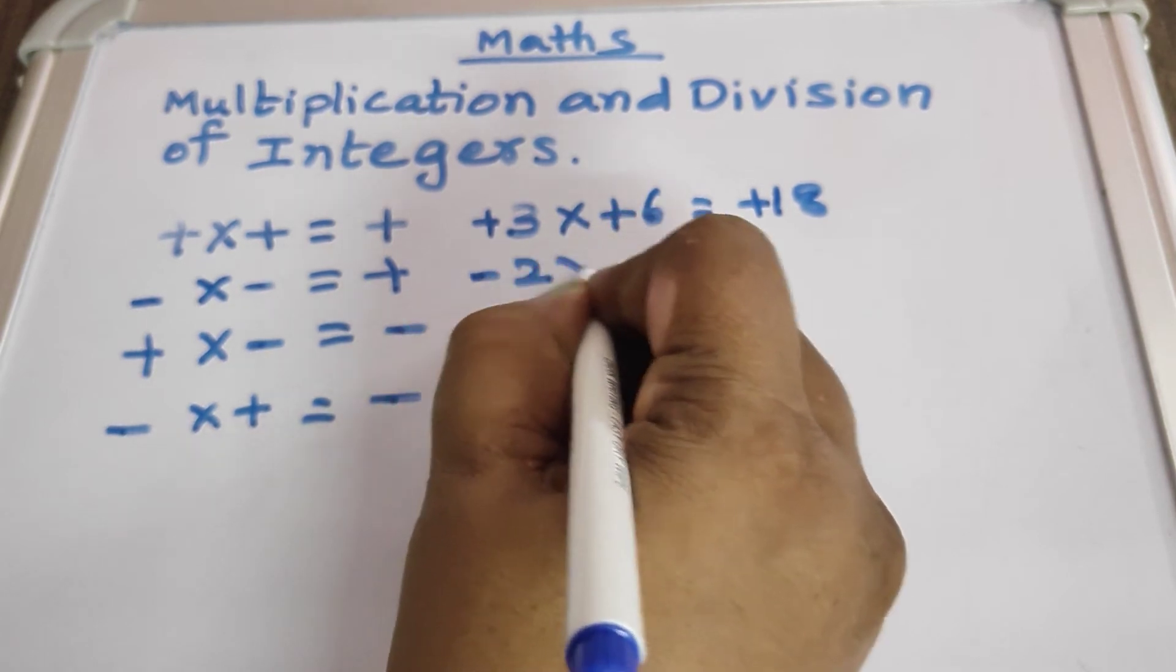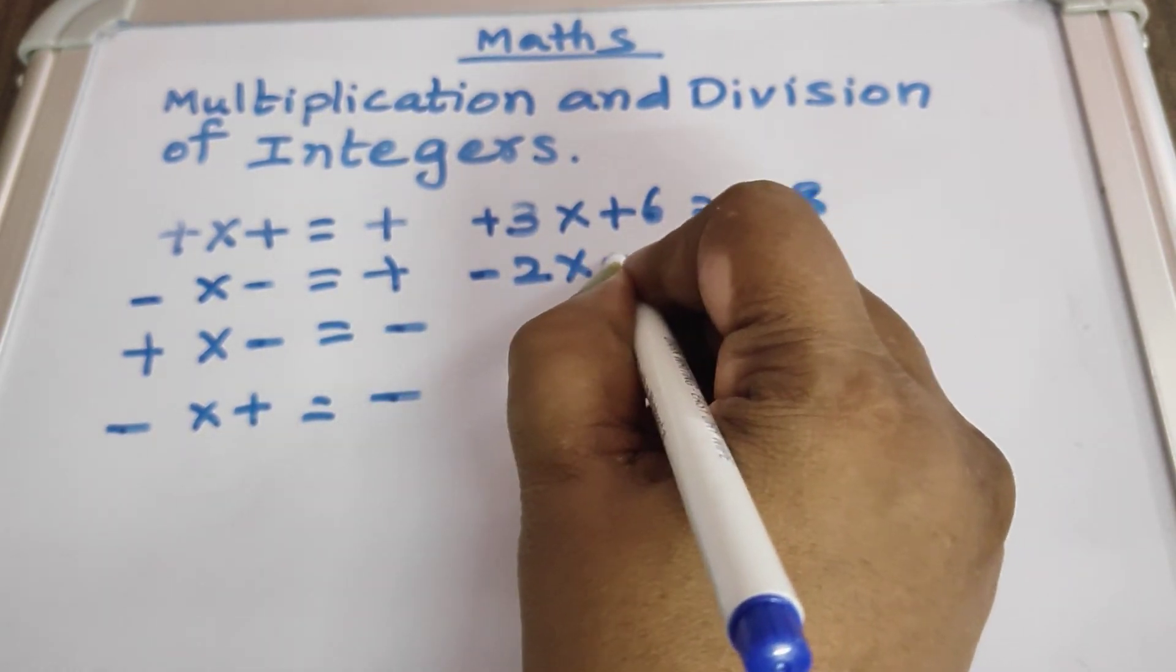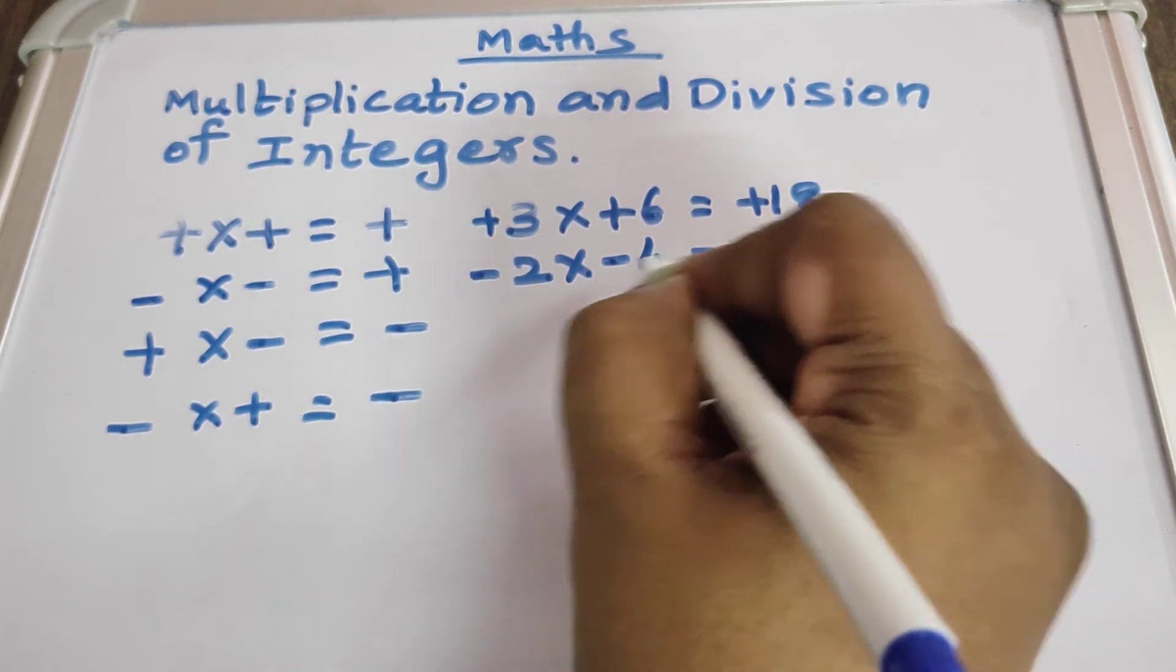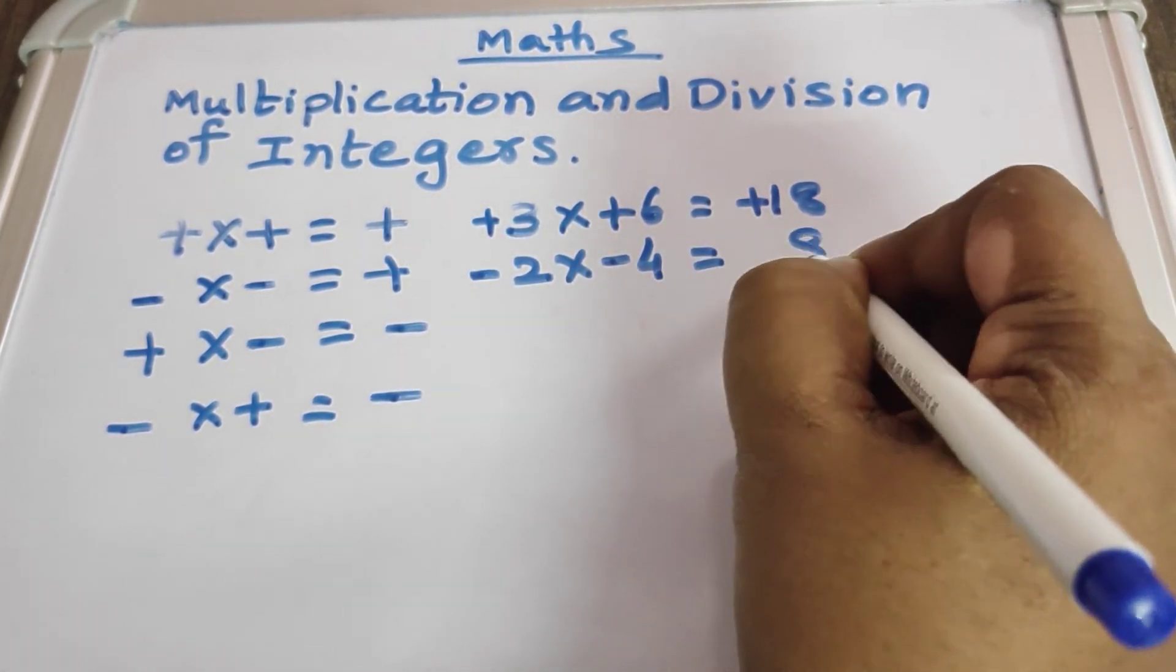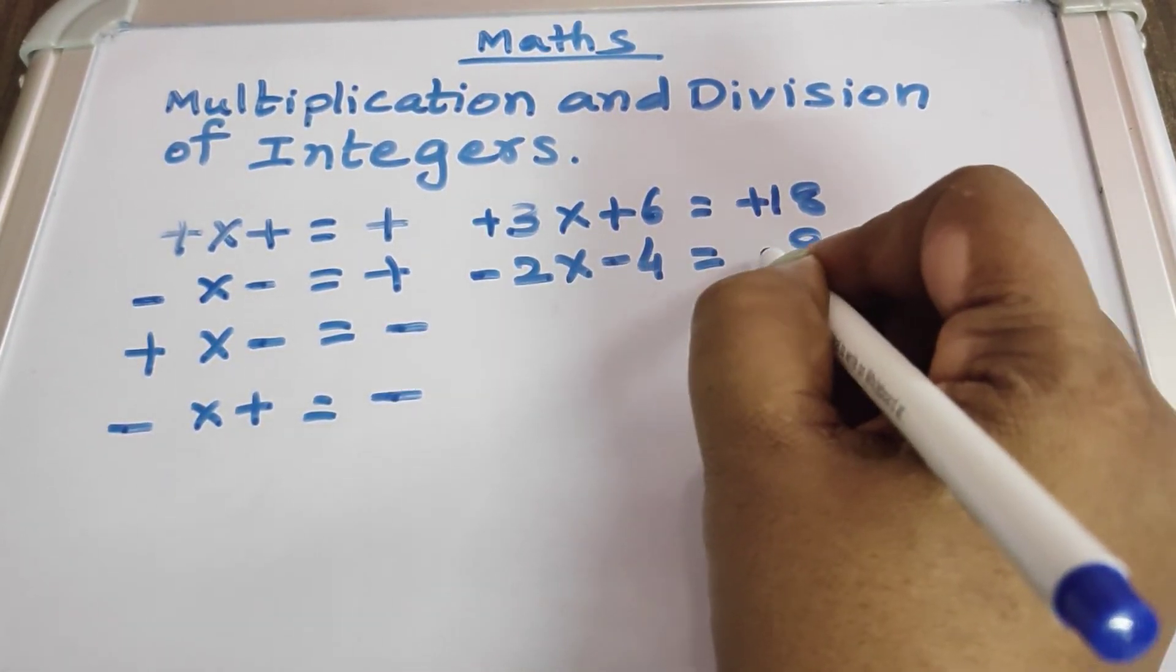Now see, minus 2 into minus 4. 2 4's are 8, and here minus into minus, plus.